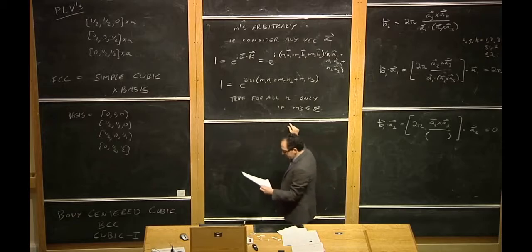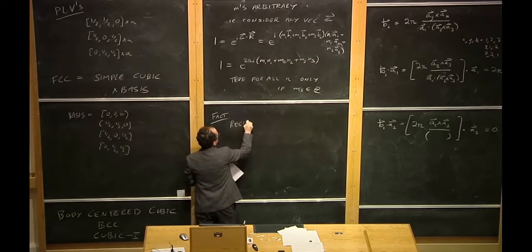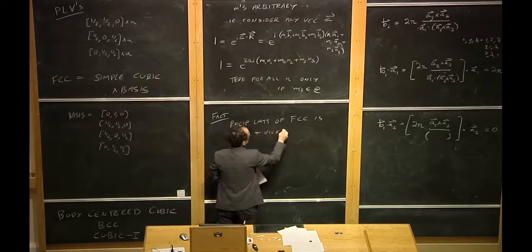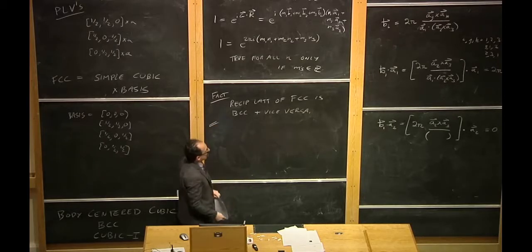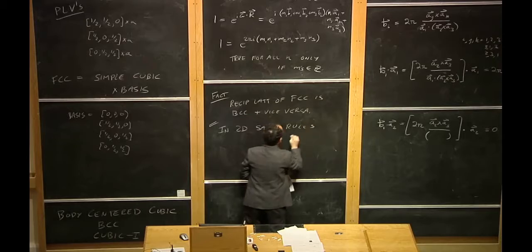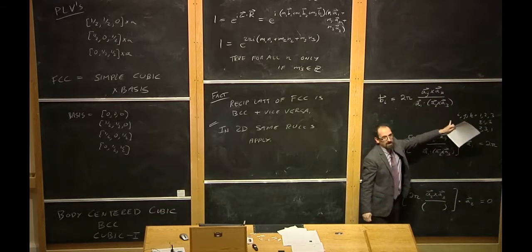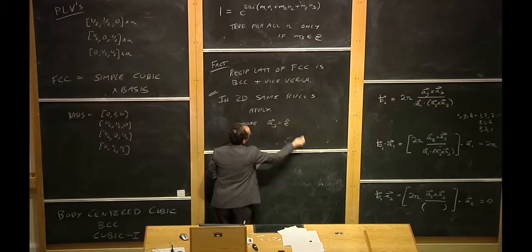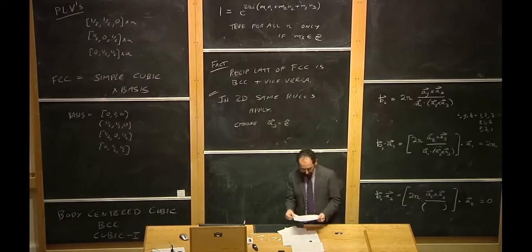Two interesting facts. First, the reciprocal lattice of FCC is BCC, and vice versa — you can check this and it's likely a homework problem. Second, in 2D the same rules apply. You handle the cross-product formula by choosing a₃ = ẑ (a unit vector coming out of the plane), treating it as your third primitive lattice vector, and then proceeding as normal.